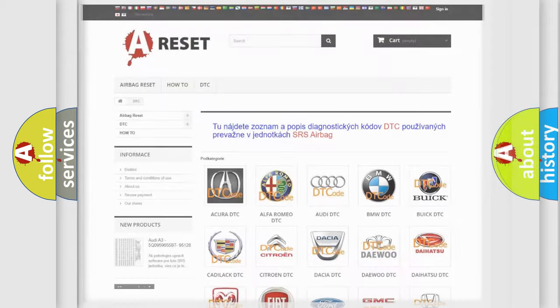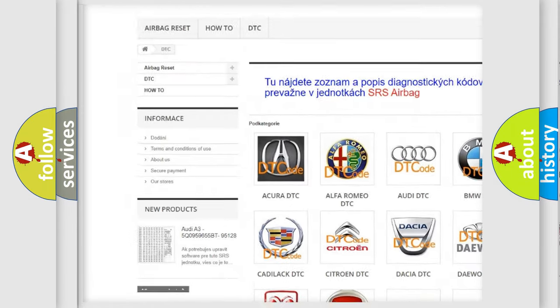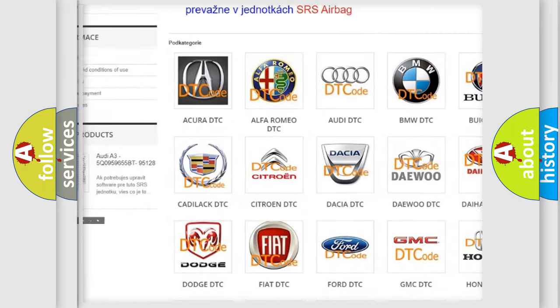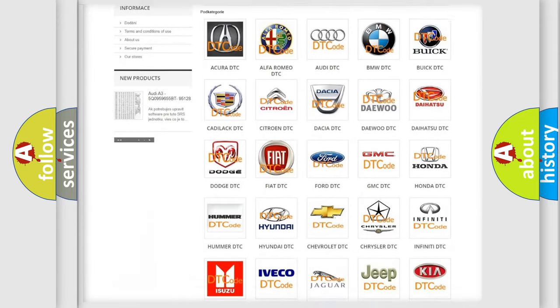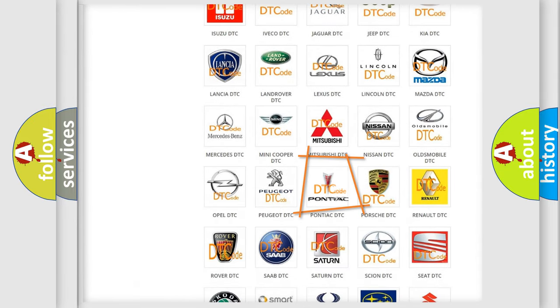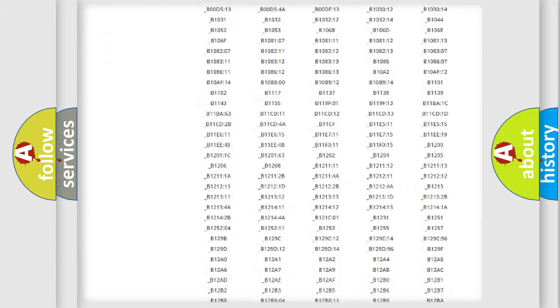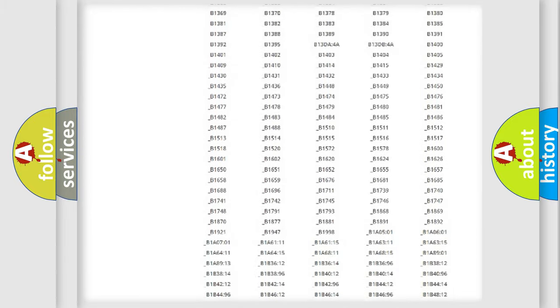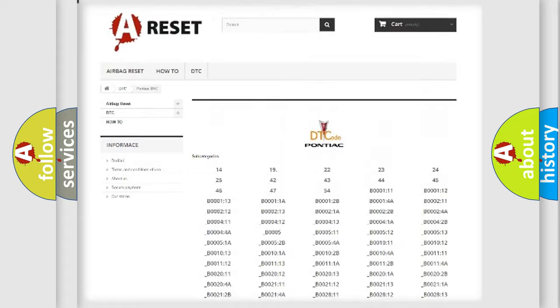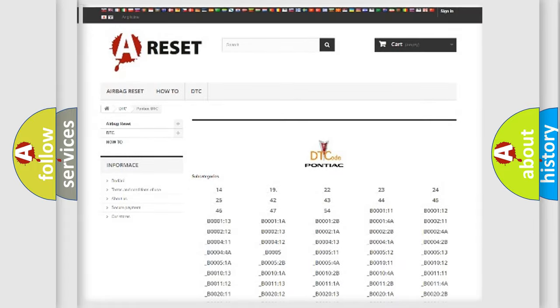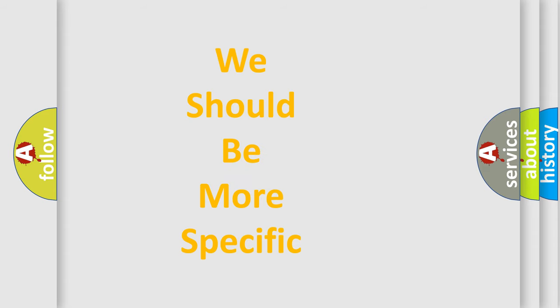Our website airbagreset.sk produces useful videos for you. You do not have to go through the OBD2 protocol anymore to know how to troubleshoot any car breakdown. You will find all the diagnostic codes that can be diagnosed in Pontiac vehicles, and many other useful things. The following demonstration will help you look into the world of software for car control units.